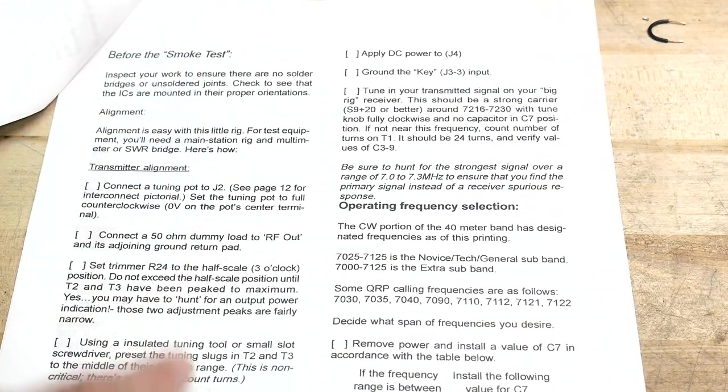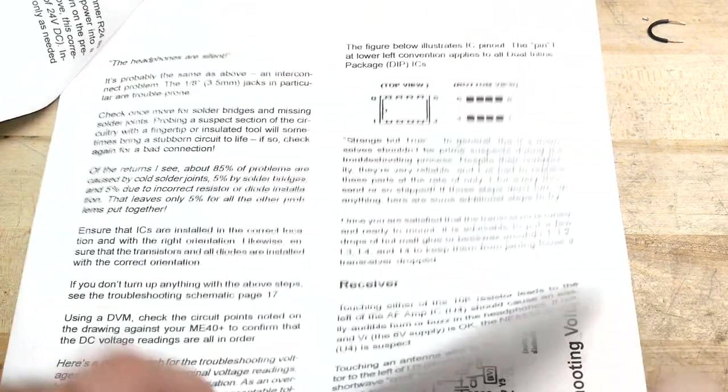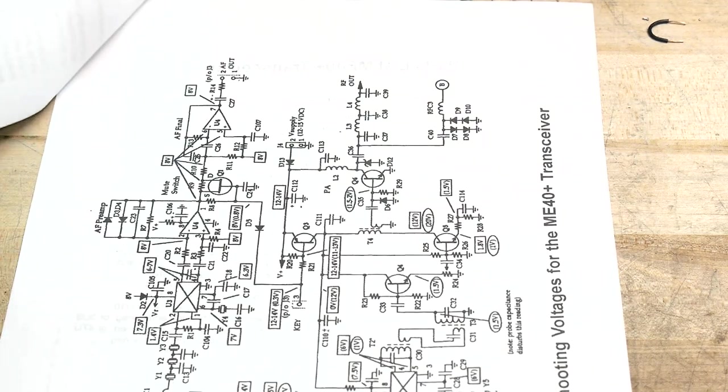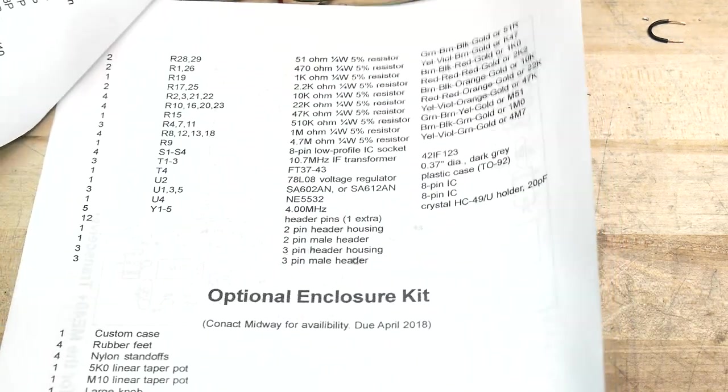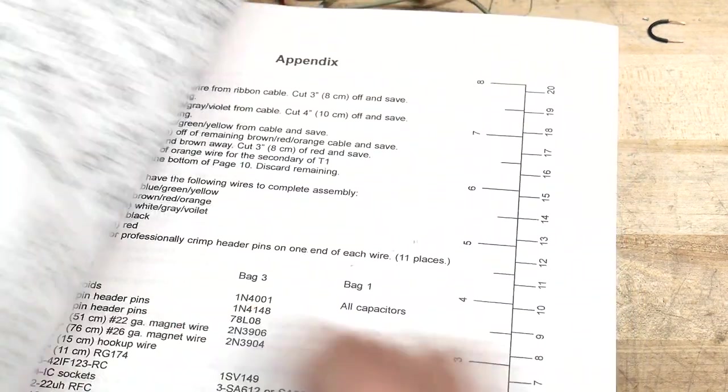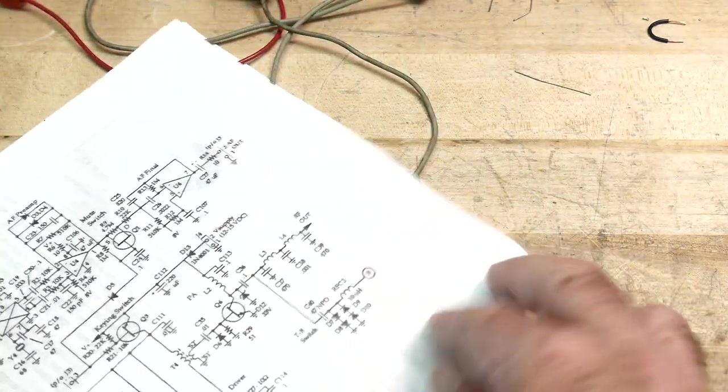Before the smoke test, do these things. Did I do that? I don't know if I did that or not. Anyway, it's got a parts list. Let me briefly show the schematic, which is kind of confusing, and then I'll show you a block diagram that makes more sense.